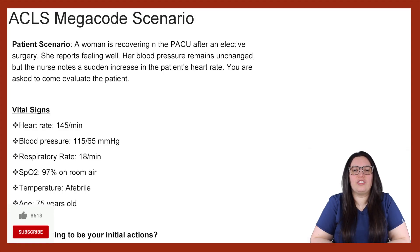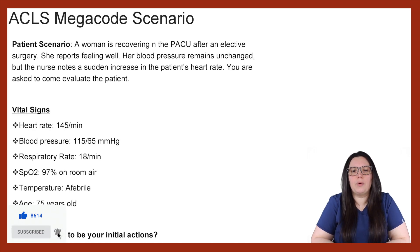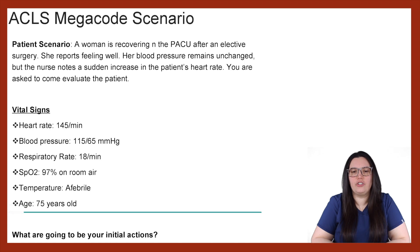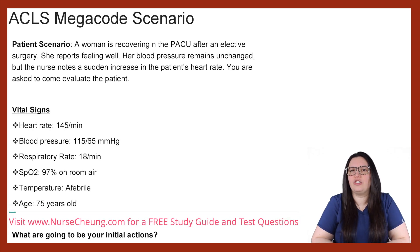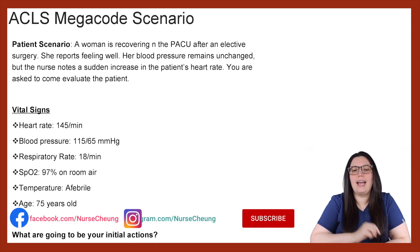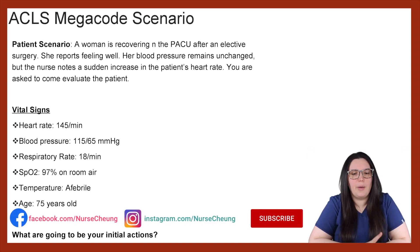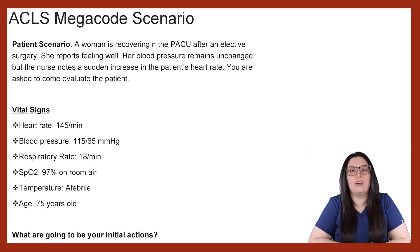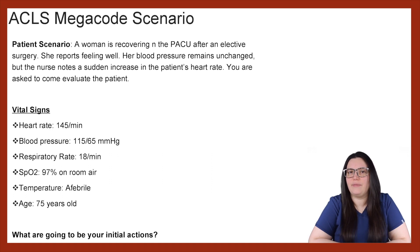Beginning with our patient scenario, we have a woman who is recovering in the PACU after an elective surgery. She reports feeling well. Her blood pressure remains unchanged, but the nurse notes a sudden increase in the patient's heart rate. You are asked to come and evaluate the patient. Upon evaluation, you note that the heart rate is 145 per minute, blood pressure is 115 over 65, respiratory rate is 18, SpO2 is 97% on room air, the patient is afebrile, and the patient is 75 years old.